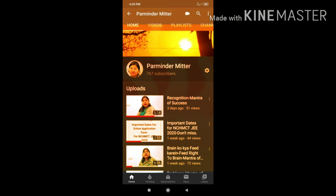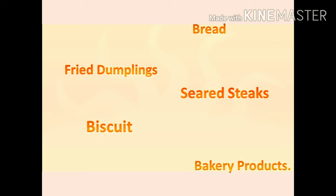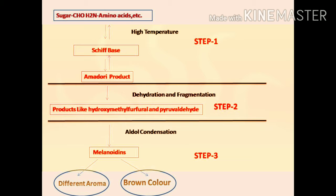As far as examples of Maillard's reaction in food go, you will find it in bread, seared steaks, bakery products, biscuits, and fried dumplings. The flavour, colour, and aroma of these foods depends upon Maillard's reaction. That is why it is one of the most important reactions.